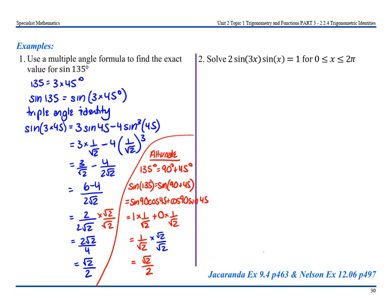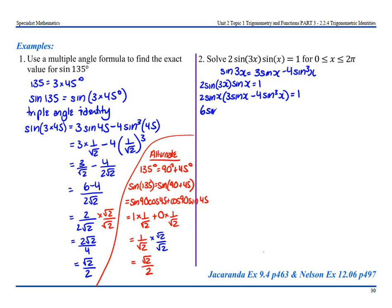For the next one, solve 2sin(3x)sin(x) = 1. Since sin(3x) = 3sin(x) − 4sin³(x), substitute: 2sin(x)(3sin(x) − 4sin³(x)) = 1, giving 6sin²x − 8sin⁴x = 1. Rearranging: 8sin⁴x − 6sin²x + 1 = 0. Let a = sin²x, so the equation becomes 8a² − 6a + 1 = 0.